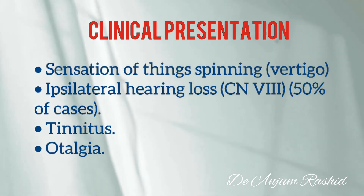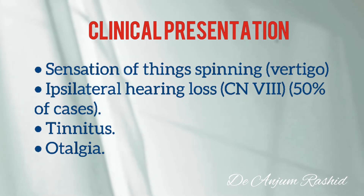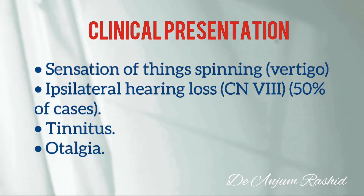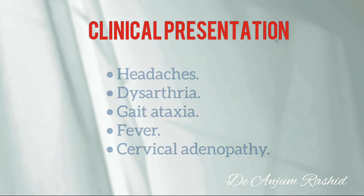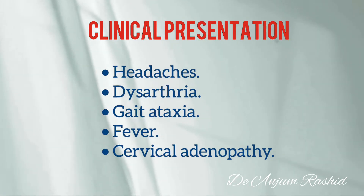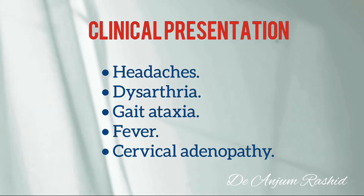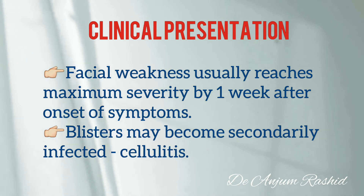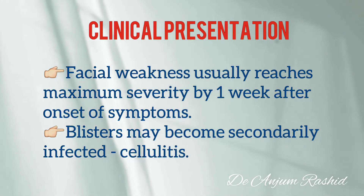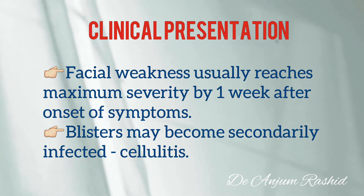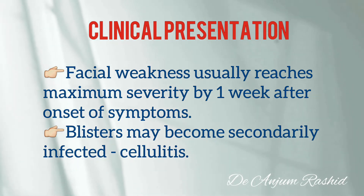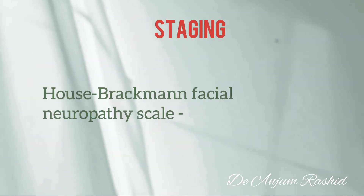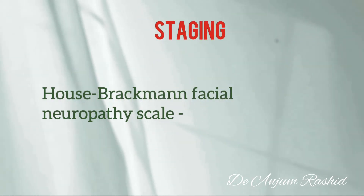There may also be facial droop and paralysis on one side of the face. Other symptoms include vertigo — a sensation of things spinning — ipsilateral hearing loss in 50 percent of cases, and vertigo is usually present in those with hearing loss. There may also be tinnitus, otalgia, headache, dysarthria, gait ataxia, fever, or cervical adenopathy. Facial weakness usually reaches maximum severity by one week after onset.